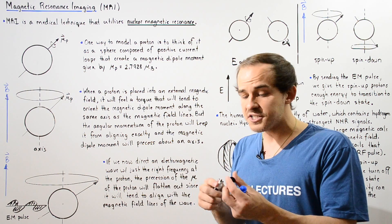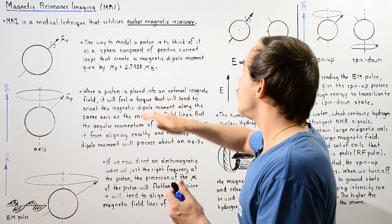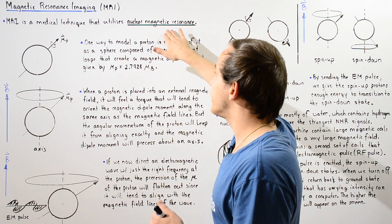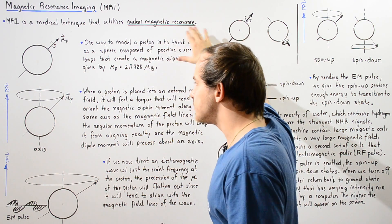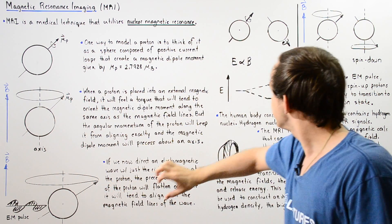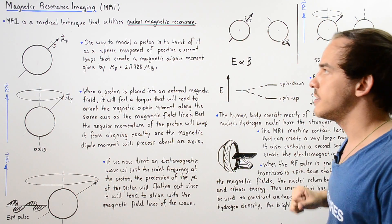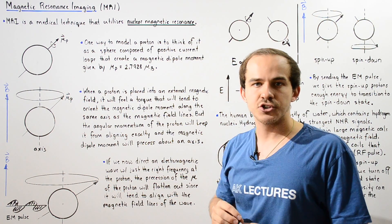This is basically how the MRI machine works, using the principle of nuclear magnetic resonance.